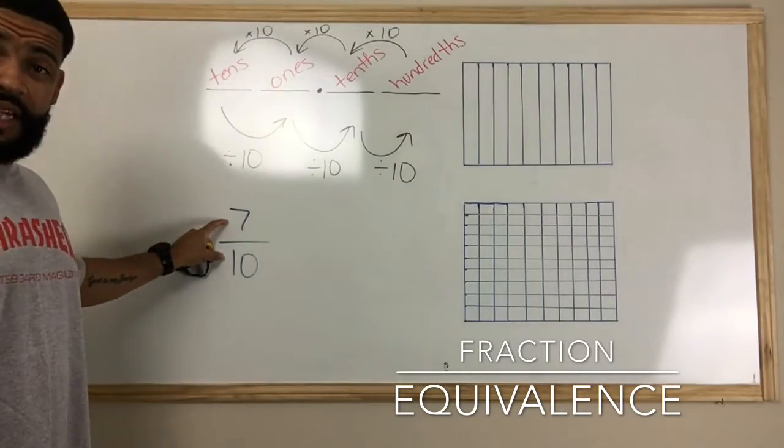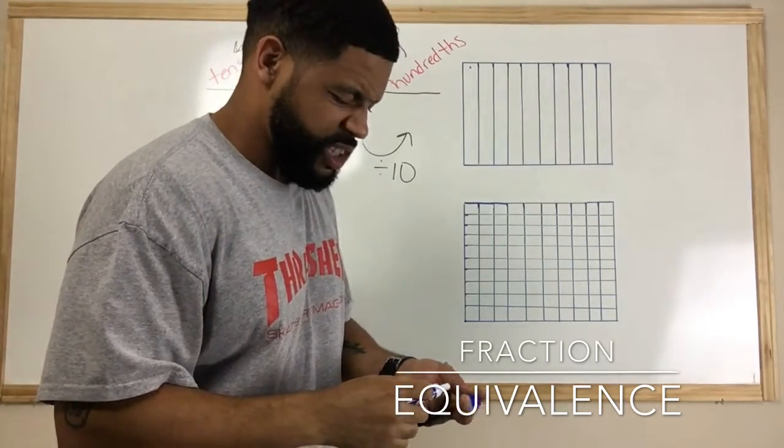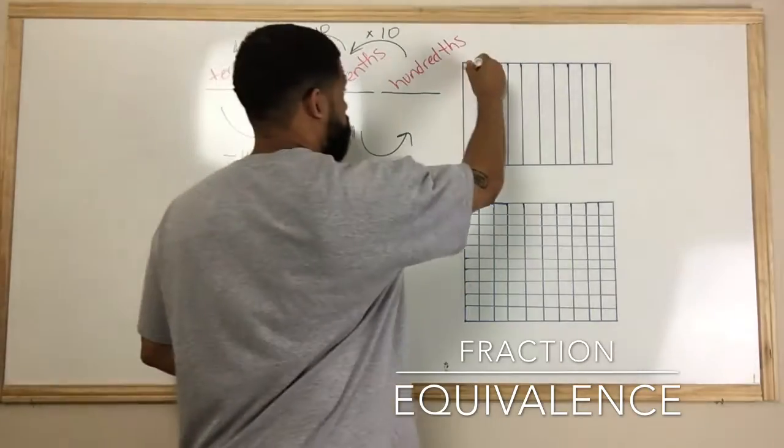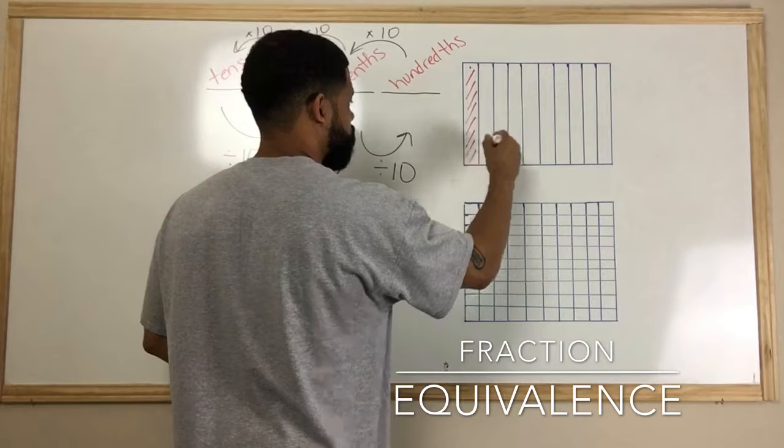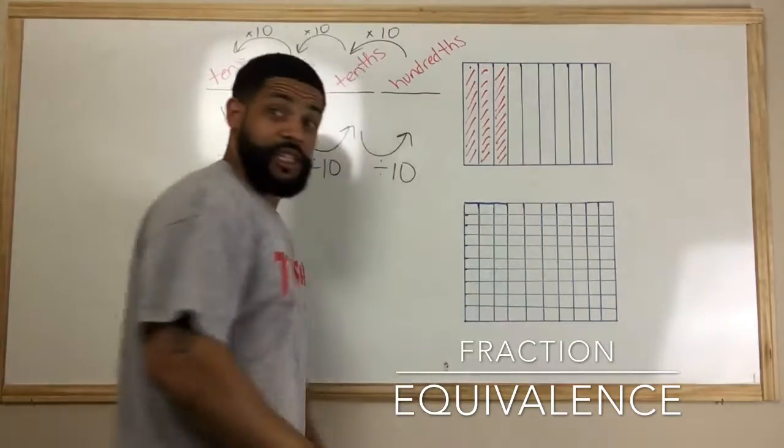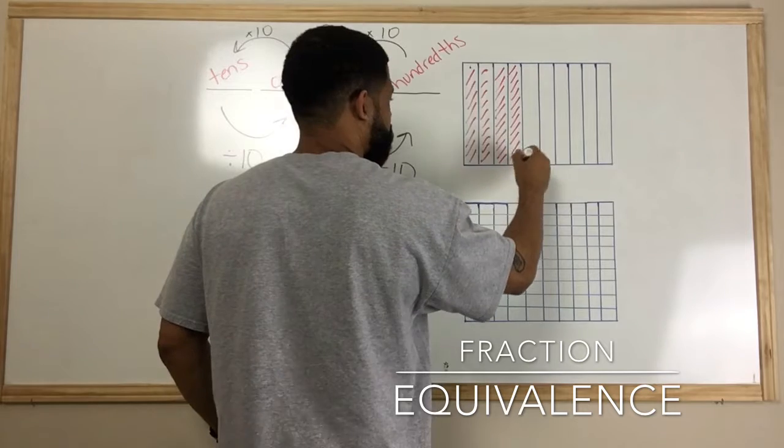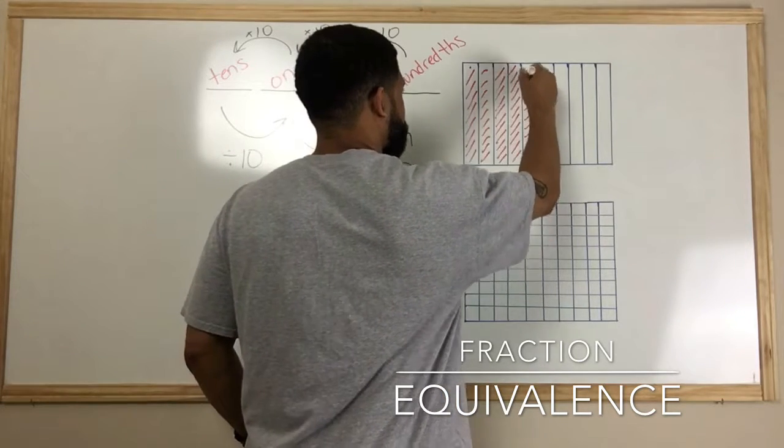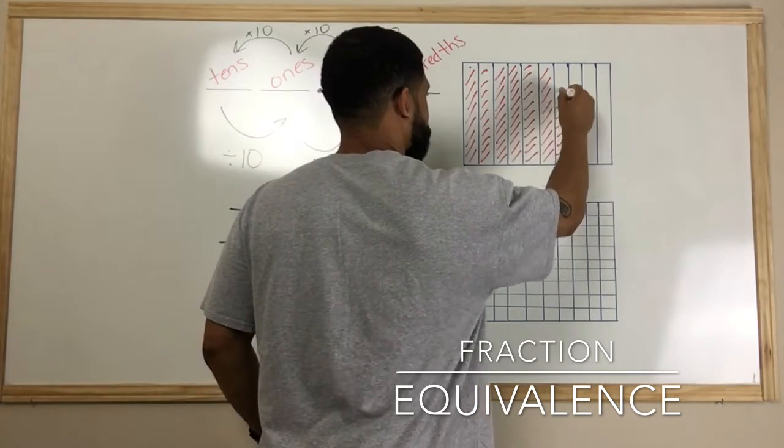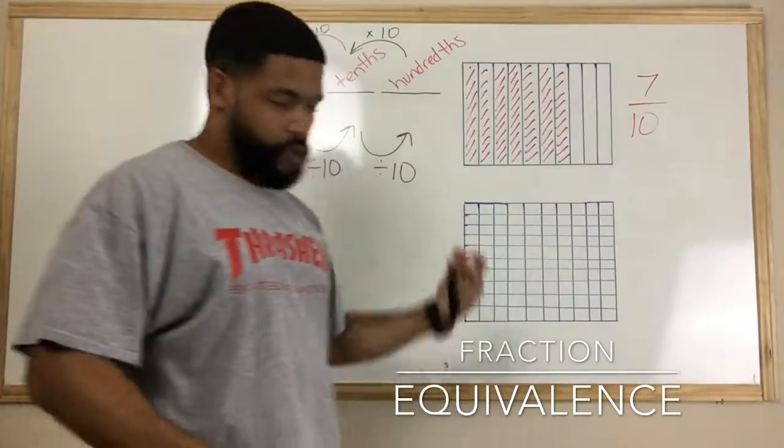Okay, so if we want to represent 7/10, then we're just going to color in, let's get a different color so you can see this. All right, so we're going to color in seven of these because seven out of ten. So one, two, three... not just three... four, five, six, seven. All right, so this represents 7/10 because we have seven of those lines shaded in.